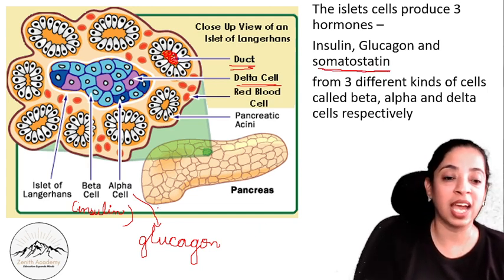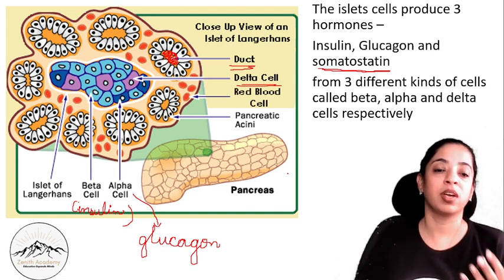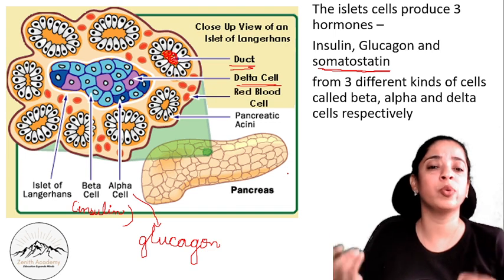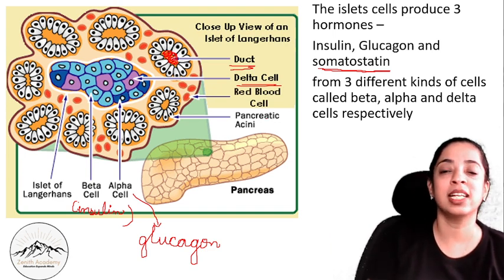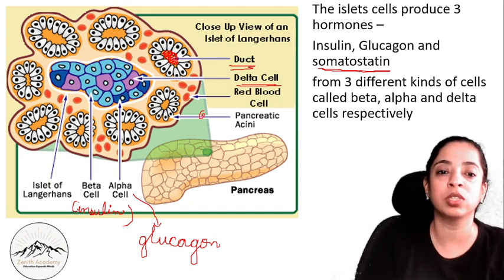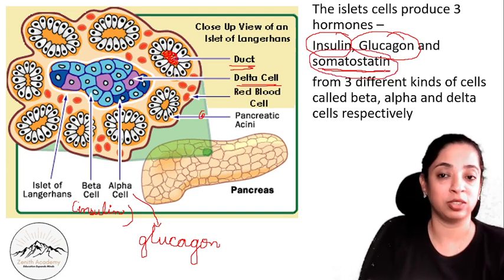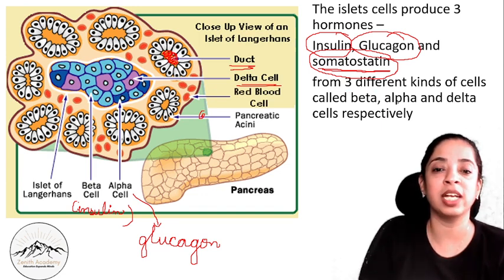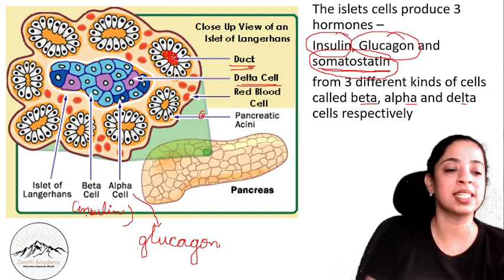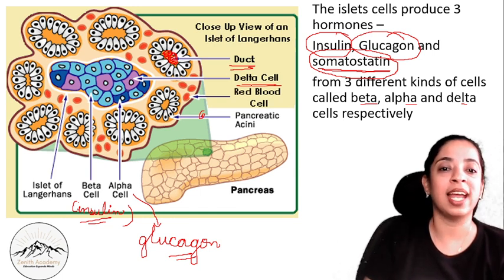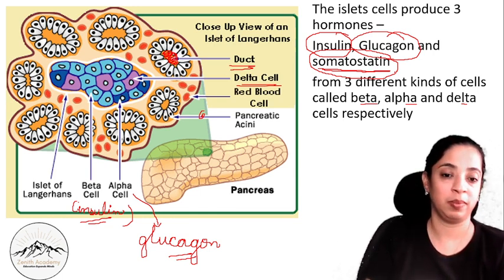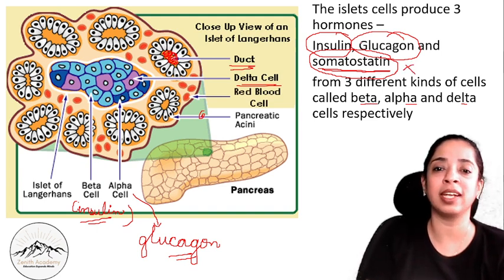The islets produce three hormones. The three hormones are insulin, glucagon, and somatostatin, released from three different kinds of cells: beta, alpha, and delta cells respectively. Beta cells secrete insulin, alpha cells secrete glucagon, and delta cells secrete somatostatin. We will not study somatostatin, but we will study insulin and glucagon in detail.